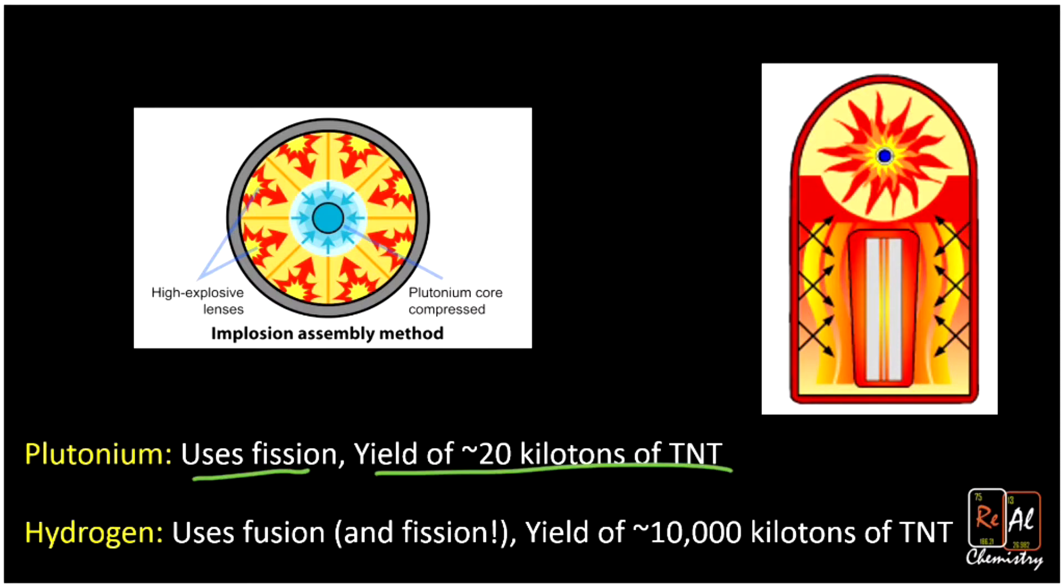And its yield is about 20 kilotons of TNT. What that means is, imagine you have a pile of 20,000 tons of TNT. So that's a huge, giant pile of TNT. So that's a big yield. However, hydrogen bombs have a way higher yield, about 500 times higher or more.